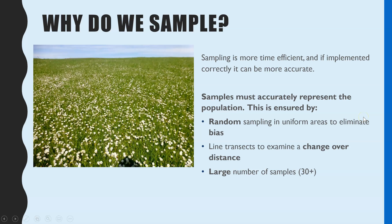Recapping from GCSE: why do we actually have to take samples in order to estimate the population size? If you were asked to count every single daisy in a field it would take absolutely ages and you'd probably make lots of mistakes, either missing daisies or recounting the same daisies. By using sampling techniques properly and following a selection of rules, it's far more time efficient and often you actually end up with a more accurate answer.